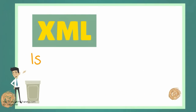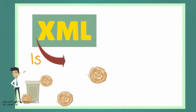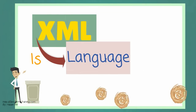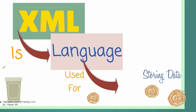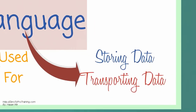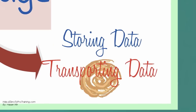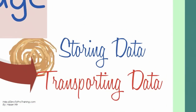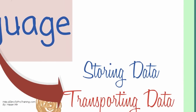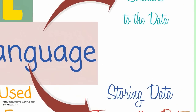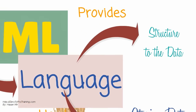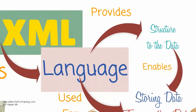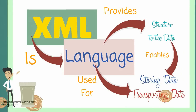XML is a language designed for two main purposes: to store data and to transport data. XML language provides structure to the data so that it could be stored and transported.